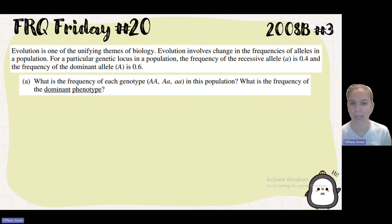For a particular genetic locus in the population, the frequency of the recessive allele is 0.4, and the frequency of the dominant allele is 0.6. What is the frequency of each genotype in this population? So first, we have to think about what is the formula for these.